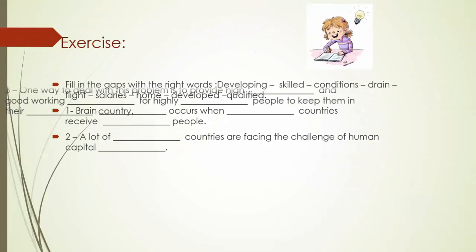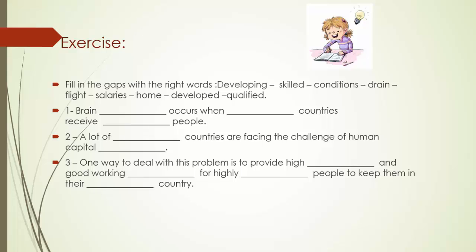Here we come to some practice. It is a fill-in-the-gaps exercise. The question is filling the gaps with the right words, and we have here a list of words. Not all the words in this list are mentioned before in this presentation, so what you have to do is look them up by yourself. The list of words is: developing, skilled, conditions, drain, flight, salaries, home, developed, qualified. You have three sentences with some gaps — try to put the right word in the right gap. Good luck with that.